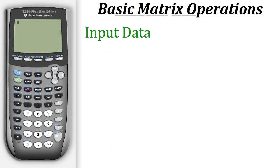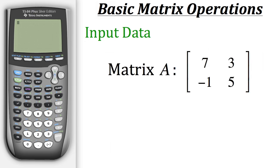Let's do that for a couple of matrices needed for the examples. First we have matrix A, which is a two by two matrix with two rows and two columns, containing the data 7, 3, negative 1, and 5. To input that we go to the matrix feature on the calculator, listed in blue lettering above the X inverse button, by hitting second and then X inverse.